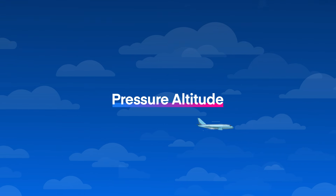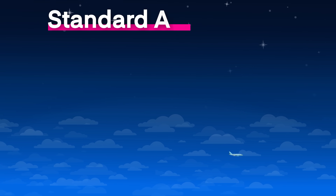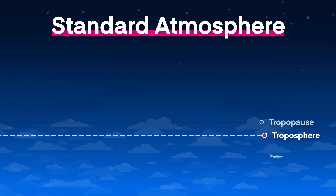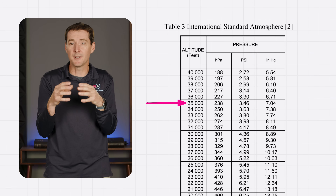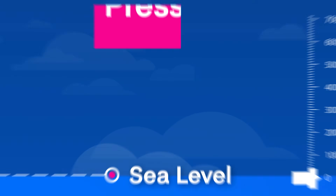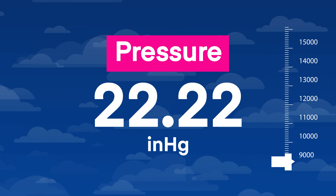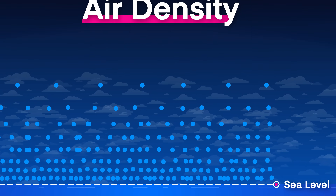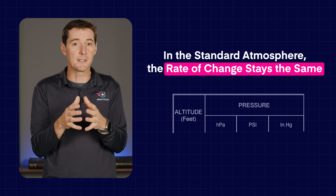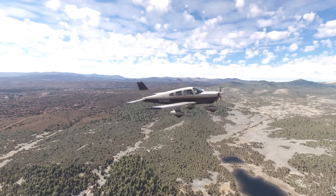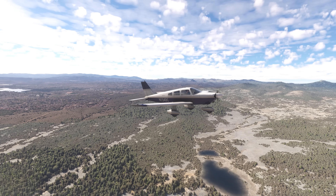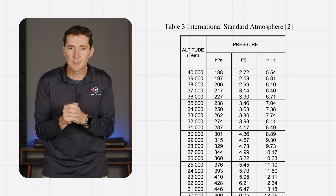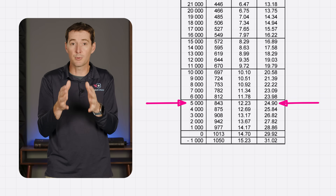When we talk about pressure altitude, we're talking about how high you'd be in something called the International Standard Atmosphere — an imaginary version of Earth's atmosphere where everything behaves in a completely predictable way. It's like a massive spreadsheet: each row is a different altitude, and next to each is a matching pressure. As you go up, pressure drops approximately 1 inch of mercury for every 1,000 feet. The higher you climb, the less air there is above you, so there's less weight pushing down — less pressure means less air density. In the standard atmosphere, that rate of change is always the same: one pressure for every altitude. So if you measure 24.9 inches of mercury, looking that up in the standard atmosphere table gives you 5,000 feet — that's your pressure altitude.